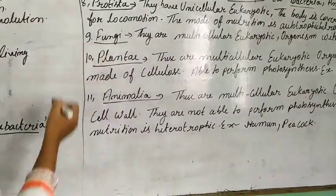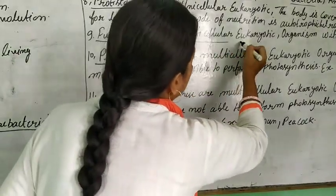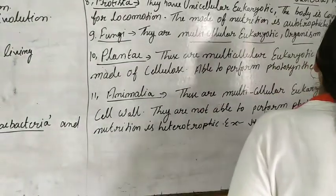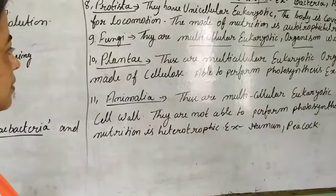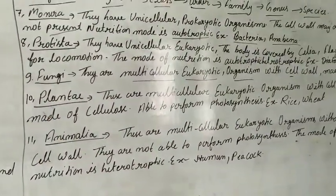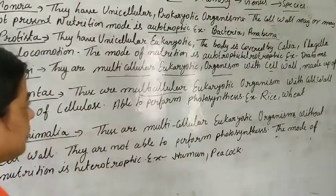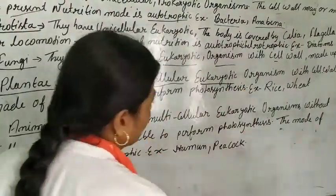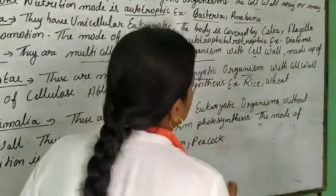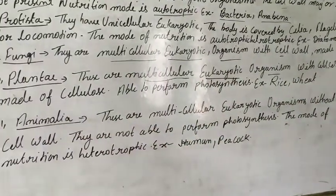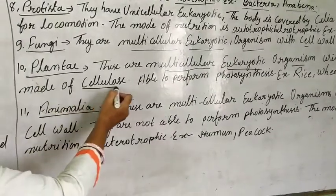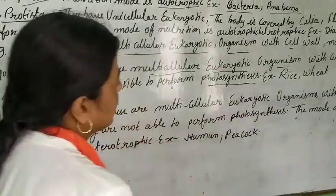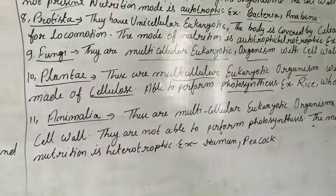Fungi are multicellular eukaryotic organisms with a nucleus present and a cell wall. Next is Plantae — they are multicellular eukaryotic organisms with a nucleus present. Their cell wall is made of cellulose, and they are able to perform photosynthesis, meaning they are autotrophs that make their own food.